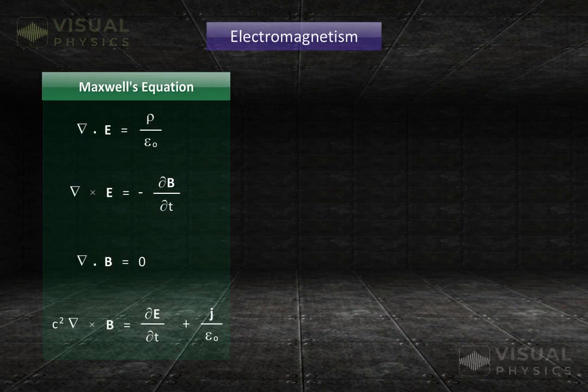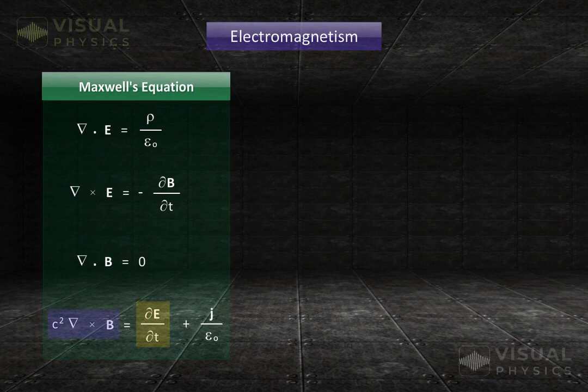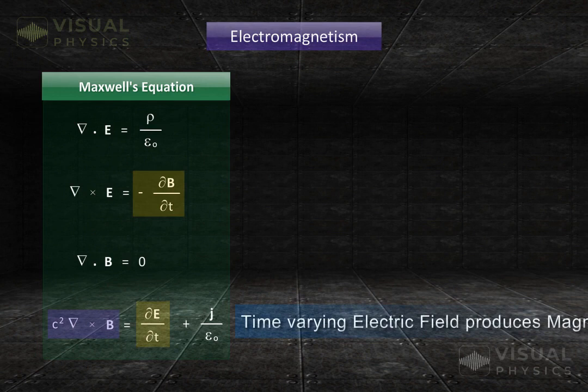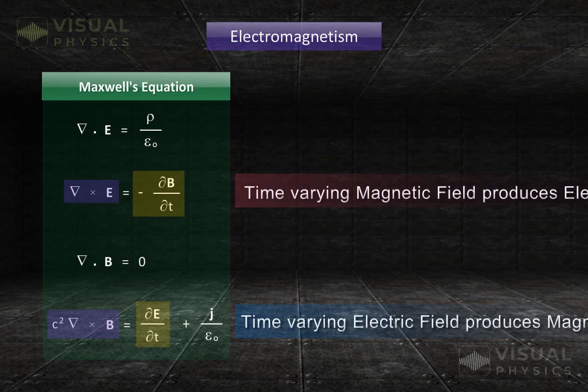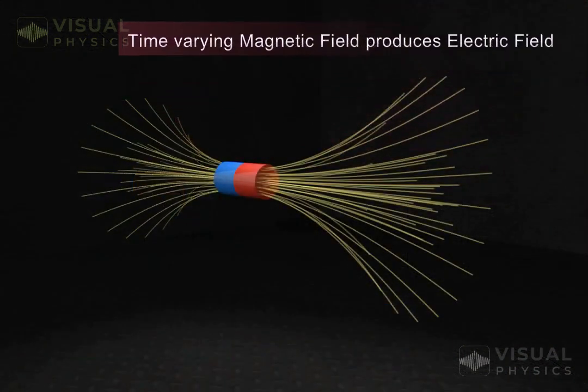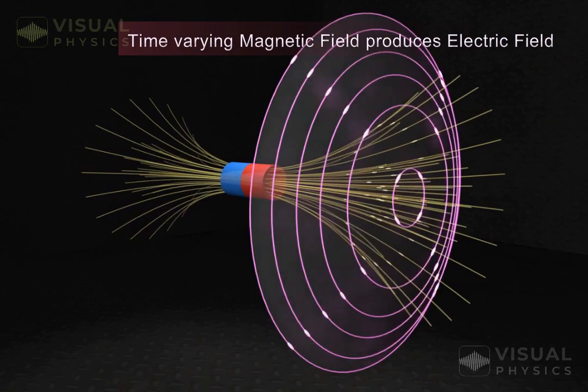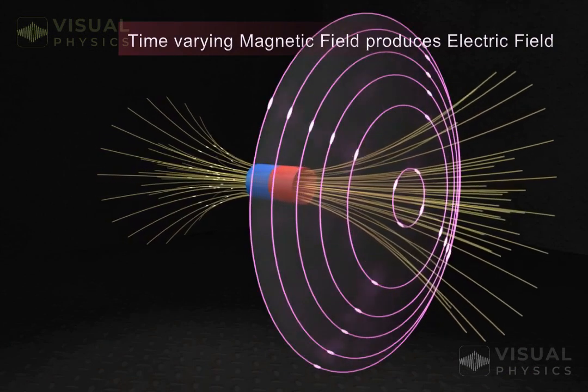As per Maxwell's equations, a changing electric field produces magnetic field, and a changing magnetic field produces electric field. So whenever we have a situation where magnetic field is changing, an electric field is induced in space.